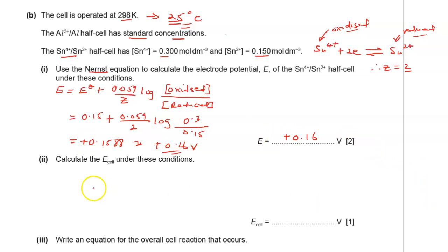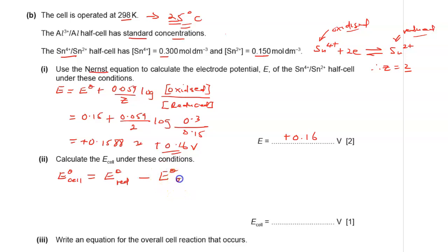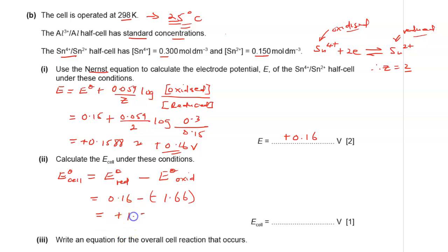Part 2: calculate the E cell under these conditions. E cell = E(reduced) − E(oxidised). The reduced species is the tin half cell with E = +0.16 V. The oxidised species is the aluminium half cell with E° = −1.66 V from the data booklet. Therefore E cell = +0.16 − (−1.66) = +1.82 V.